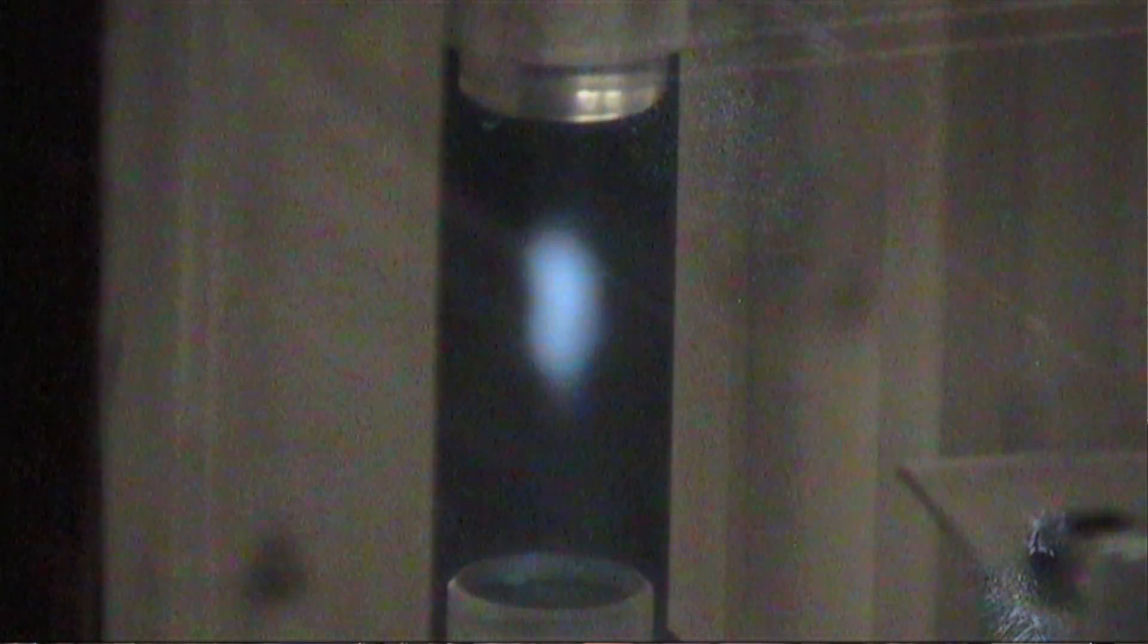So in our laser, we actually trap about a million atoms of rubidium in between two mirrors and we levitate them there. And then those atoms, while they're sitting between the mirrors, they spontaneously synchronize with each other. This is kind of like crickets that all could chirp independently, but after a while they hear each other and they start chirping together.